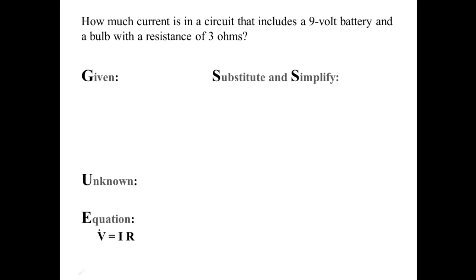How much current is in a circuit that includes a 9-volt battery and a bulb with a resistance of 3 ohms?